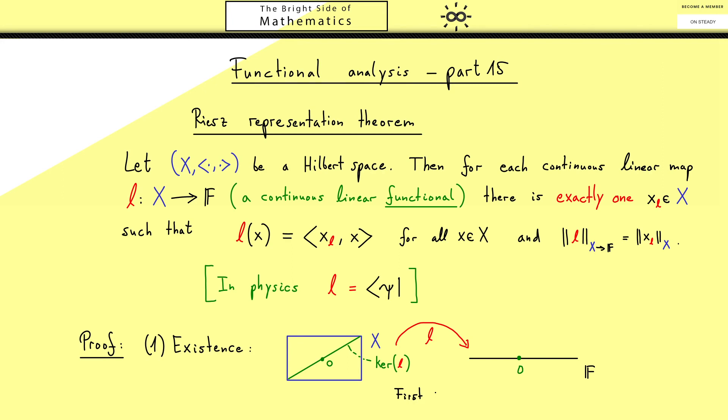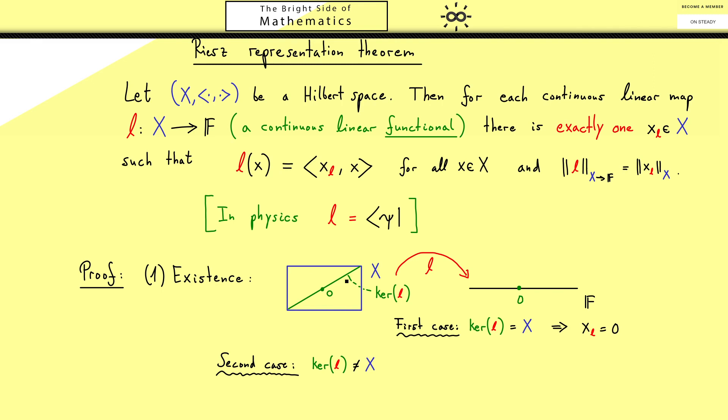Now we immediately see one trivial case namely when the kernel is the whole space. This means that we have the 0 functional there and we don't have any choice other than choosing our xL as the 0 vector. Only the 0 vector will send every vector in the inner product to 0. With this simple case out of the way we can now go back to the picture.